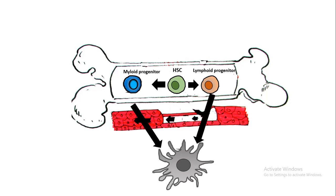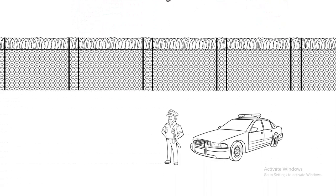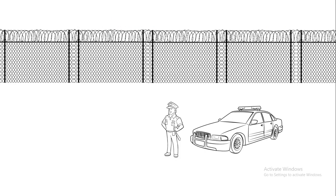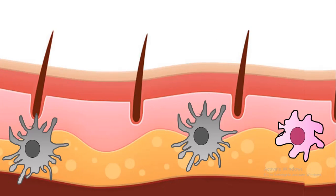Let's try to understand the function of the dendritic cell with a simple example. Think of a country whose border is secured by fences so intruders cannot come in, and there is a border patrolling police always looking for intruders. Similarly, at several barriers of our body — for example, just underneath the skin — there are patrolling police-like cells, such as dendritic cells and macrophages, which are always patrolling near the boundaries and looking for potential pathogens.